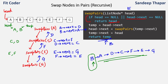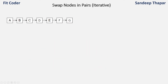We return the pointer to B, and our linked list is B, A, D, C, F, E, G — so we have swapped the linked list nodes in pairs using simple recursion. In linked list questions that can be done recursively, we can also do them iteratively. Let's see how we can solve the same problem using the iterative method.